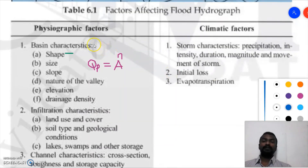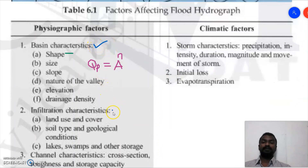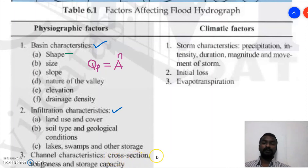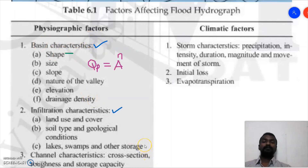The third physiographic factor is channel characteristics, including cross-section, roughness, and storage capacity of the stream channel. Channel characteristics also affect the shape of the hydrograph, but their impact is less significant compared to basin characteristics and infiltration characteristics. The basin characteristics remain the most important physiographic parameters.